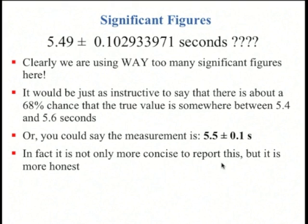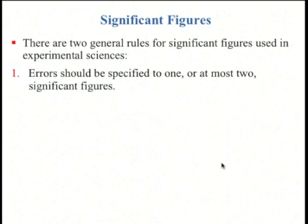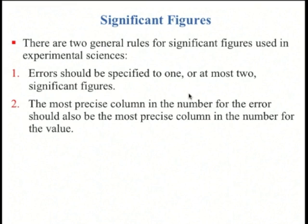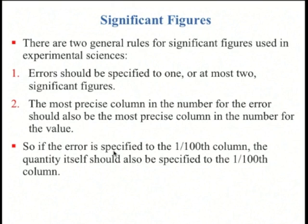So hopefully that motivated these following two rules. One, errors should only be specified to one significant figure, or you could maybe use two. In fact, a lot of scientific papers use two, but you never see anyone specifying an error to three or four significant figures. It's just way too much. Rule number two is that once you know how many significant figures are in the error, the most precise column in the number for the error should also be the most precise column in the number for the value. So if you specify the error to the hundredth column, then the quantity itself, the value, should also be specified to the hundredth column.